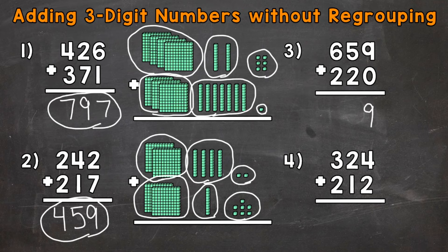Then we have 5 plus 2, or 50 plus 20. That's going to give us 7 in the tens place. And then lastly in the hundreds place, 600 plus 200, or 6 plus 2 gives us an 8 in the hundreds place. Our final answer is 879.